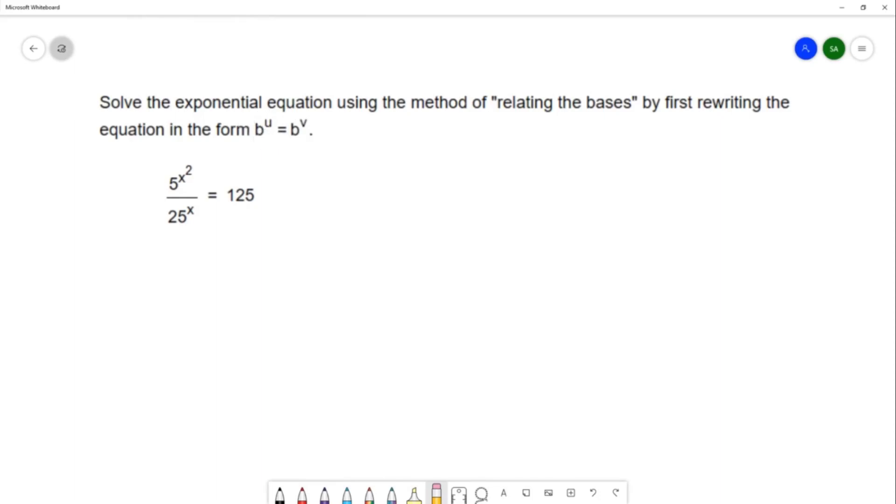So with the method of relating the bases, we start by writing the equation as b to the u equals b to the v, and then we can use the one-to-one property of exponents or exponential functions to say that the exponent on the left must equal the exponent on the right. This allows us to simplify the equation and continue solving.